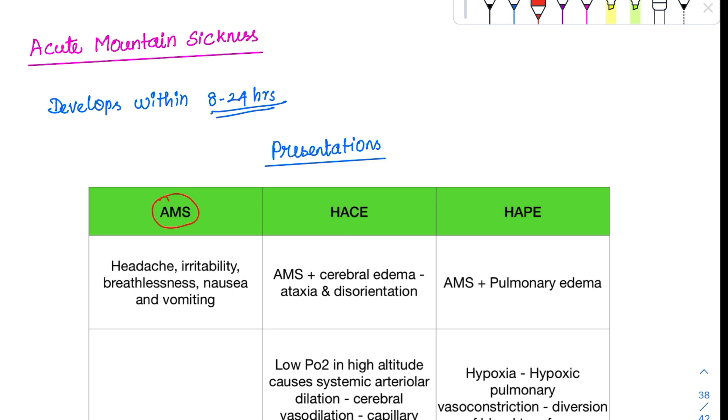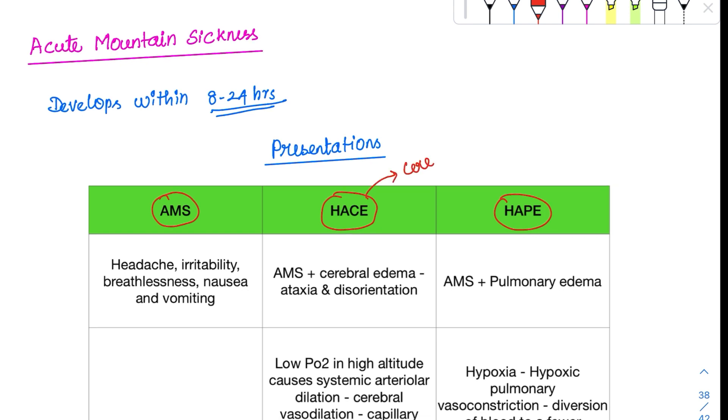There are three forms of acute mountain sickness: AMS itself, then HASE and HAPE. HASE is high altitude cerebral edema. HAPE is high altitude pulmonary edema. The most important symptom for AMS is headache - a mandatory symptom. All develop headache in acute mountain sickness, plus irritability, breathlessness, nausea and vomiting.